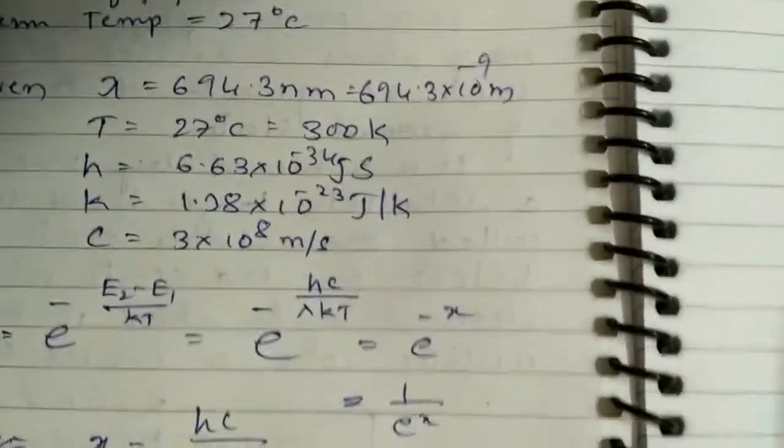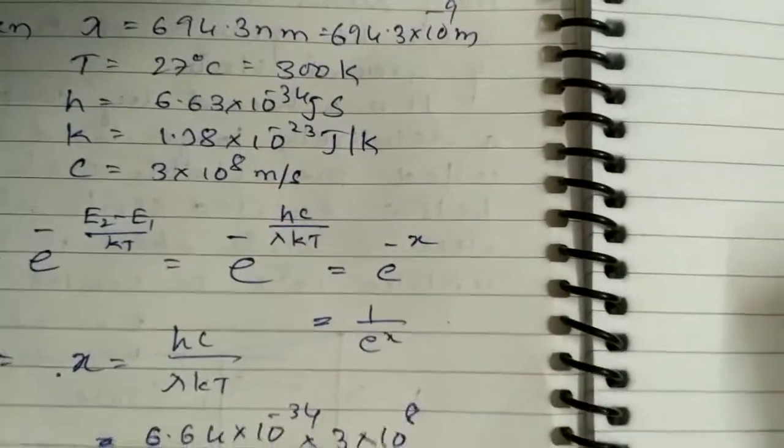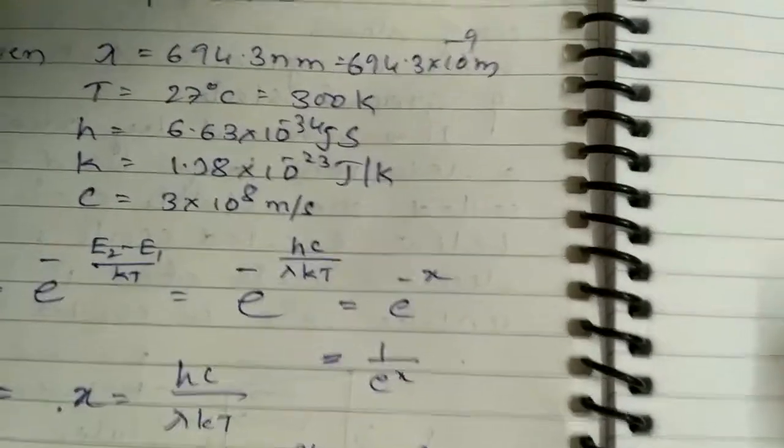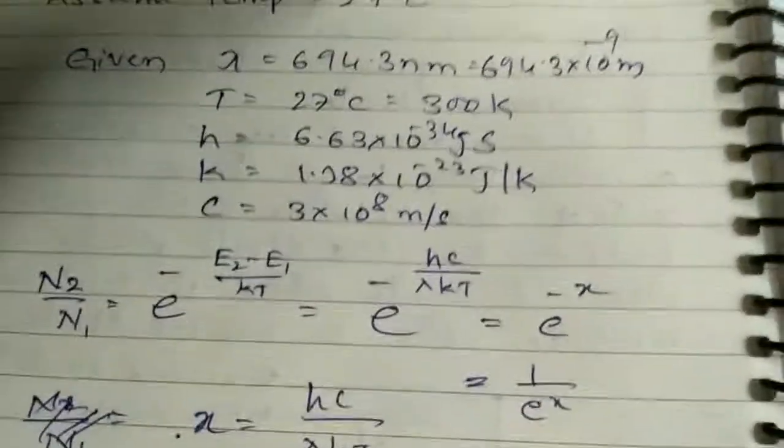The given quantities are: wavelength, temperature, Planck's constant h, Boltzmann constant k, and the velocity of light c.